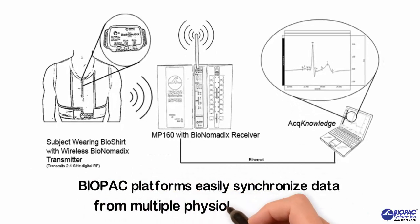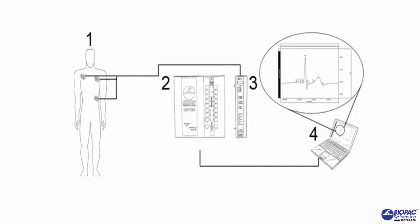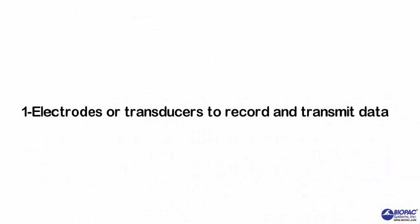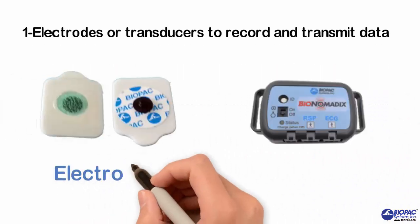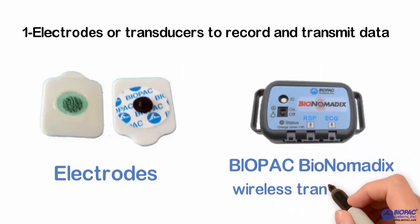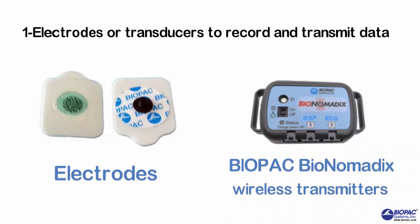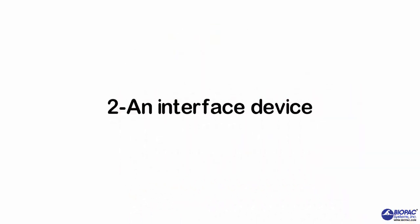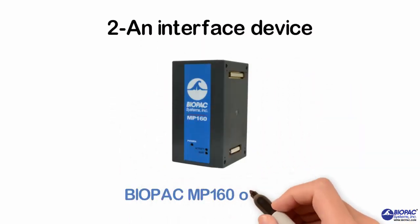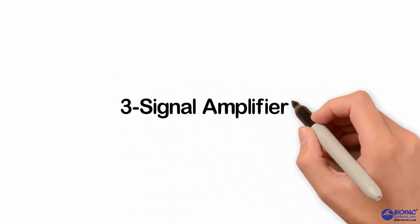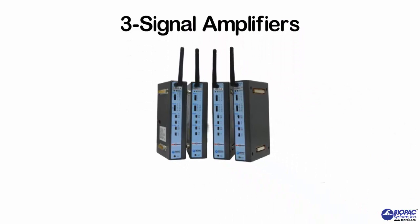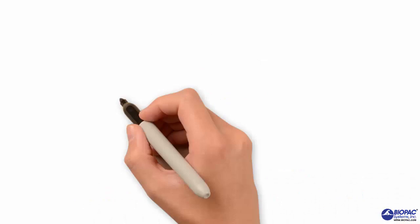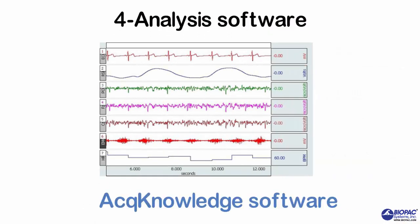Biopac platforms easily synchronize data from multiple physiological signals, and a platform has four major elements. One: electrodes or transducers to record and transmit data, like electrodes and Biopac Bionomadics wireless transmitters, or the Bionomadics BioShirt. Two: an interface device, like the Biopac MP160 or MP150. Three: signal amplifiers for wireless or wired data, like Bionomadics wireless amplifiers. And four: analysis software, like AcqKnowledge software.